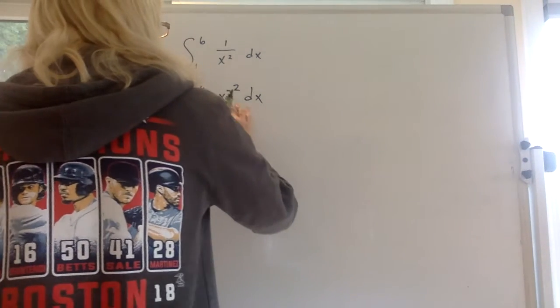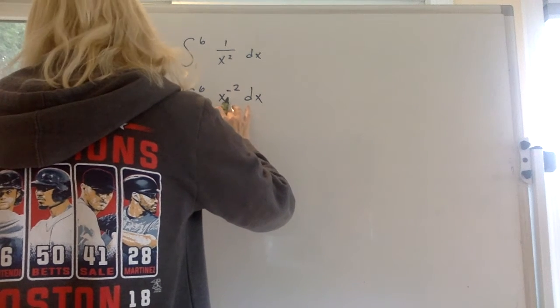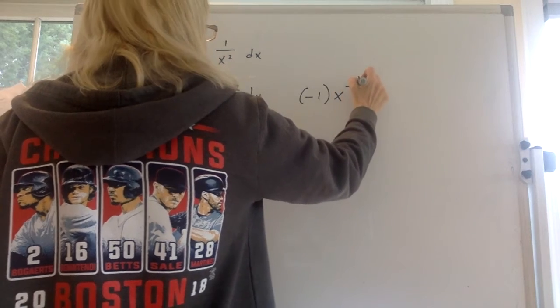So how would we take the anti-derivative of x to the negative 2? We'd have to put a negative 1 in front of it, x to the negative 1.